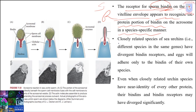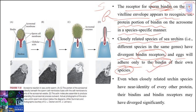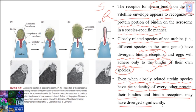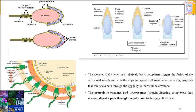Closely related species of sea urchin have divergent bindin receptors, and eggs will adhere only to the bindin of their own species. Different species have different types of bindin and bindin receptors — even when closely related sea urchin species have near identity of every other protein, their bindins and bindin receptors may have diverged significantly.